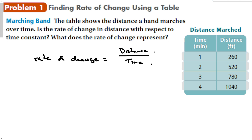Time is the independent variable because distance depends on how much time has passed — you walk more the longer there is. So let's calculate the rate of change from each row of the table using change in distance over change in time.